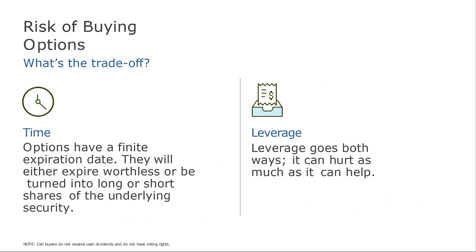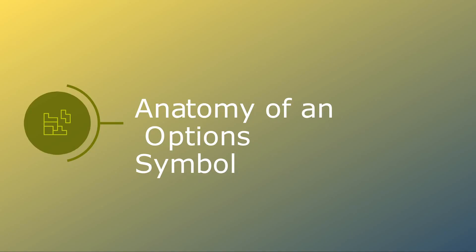Regarding the risk of buying options: when you are buying an option, the biggest enemy is time. When you are selling an option, time is actually your biggest ally — I will explain this more later. Options will either expire worthless or be converted into shares of the underlying security. Of course, leverage is present — and leverage is a sword with two edges: it can help you, but it can also make you lose double, triple, or whatever the leverage amount is.